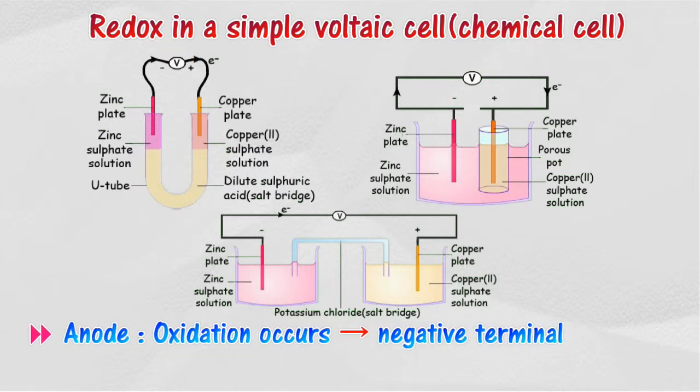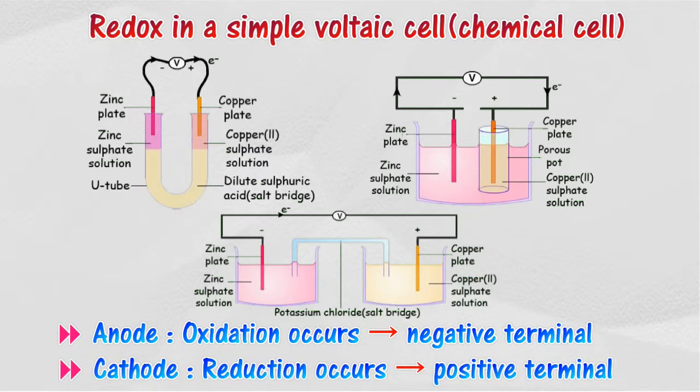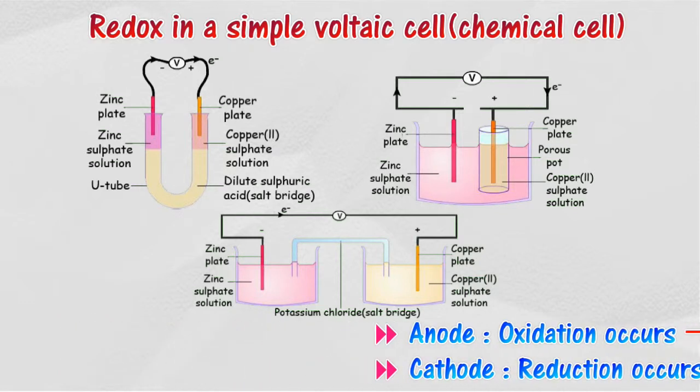The oxidation process occurs at the anode and the reduction process occurs at the cathode of an electrochemical cell. The terminal negative acts as the anode of the cell and the terminal positive acts as the cathode of the cell.